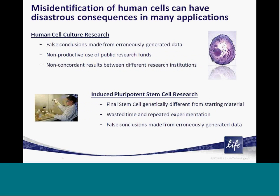In both of these situations, using cells that may be mislabeled or that lack cell genetic integrity can have disastrous consequences on research results. For instance, it can result in false conclusions being published, difficulty replicating experiments across different institutions, and the potential for lots of wasted experimentation, labor, and public research funds.